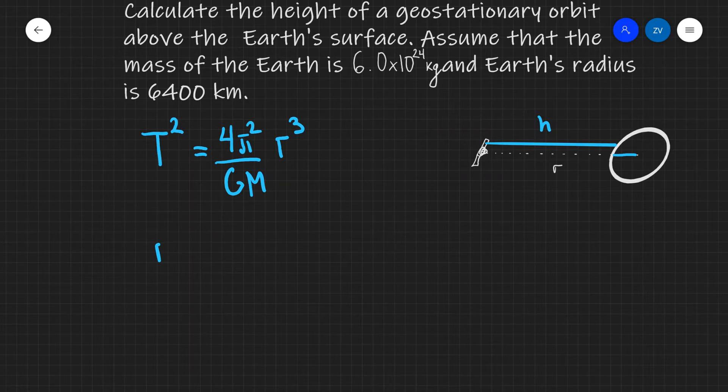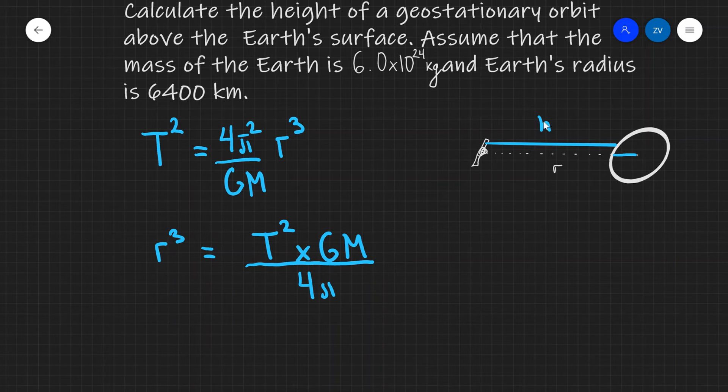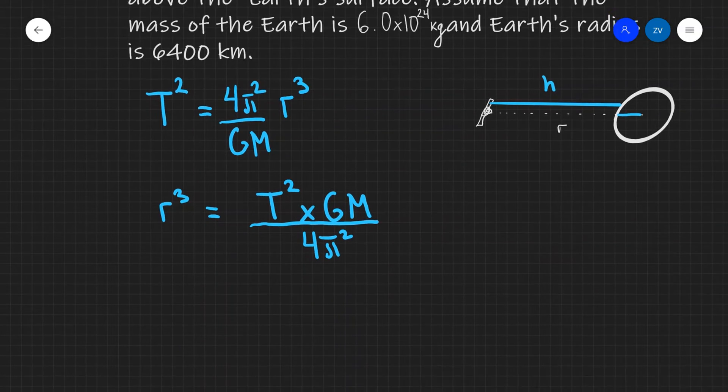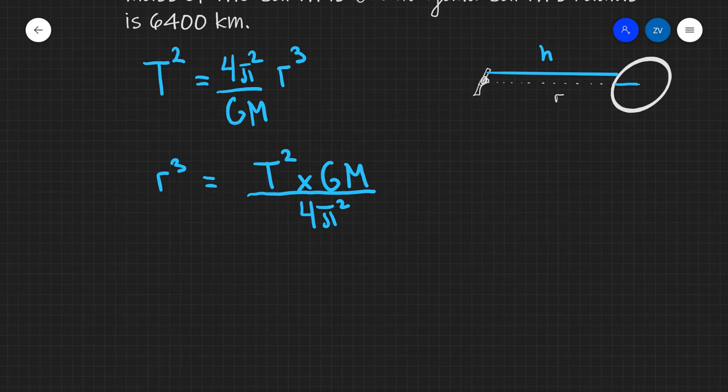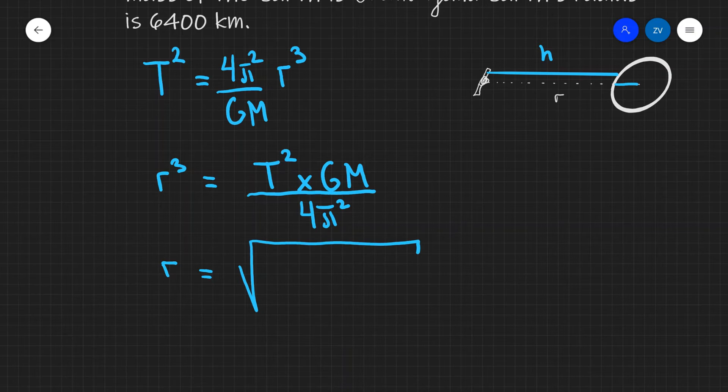Let's first of all just rearrange for r. So first I'm going to rearrange for r³. So r³ is going to equal to T² multiplied by GM. And then I'm going to bring the 4π² underneath the fraction. So divided by 4π². Now we need to take the cube root of all of this. So this is going to equal to the cube root of T² times GM divided by 4π².